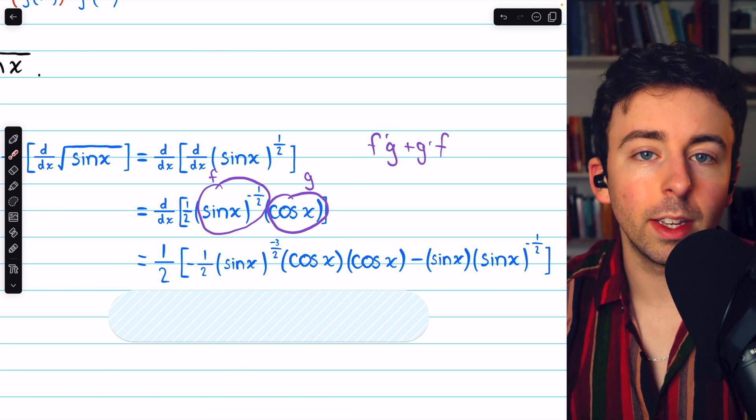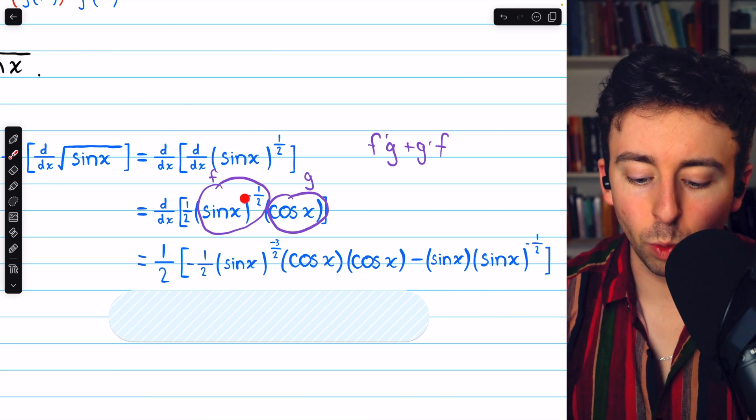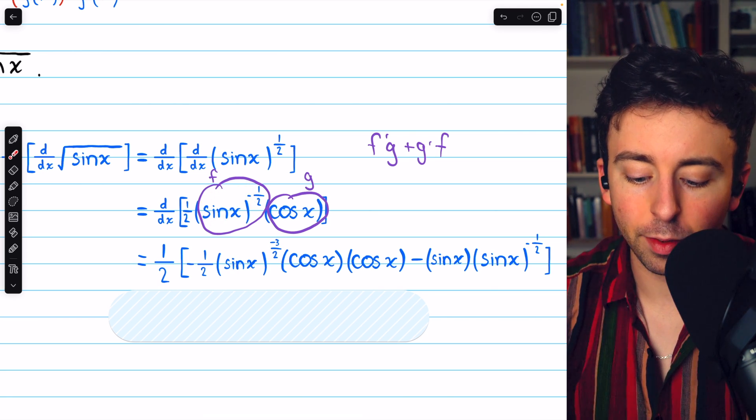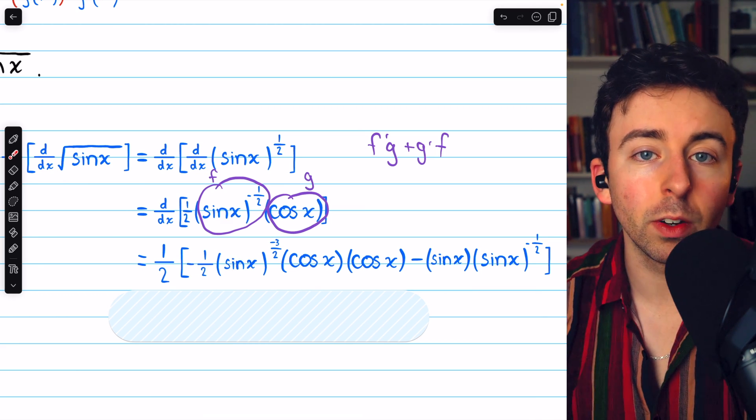Then the first part of the product rule is f prime g, so again we're using the chain rule. The derivative of sine x to the negative half, bring the negative half out front, so negative one-half times sine x, leaving the inside function unchanged,